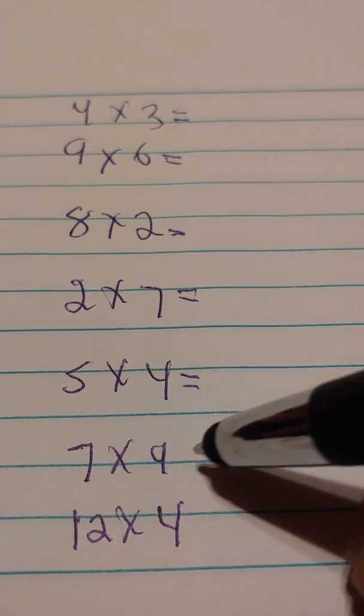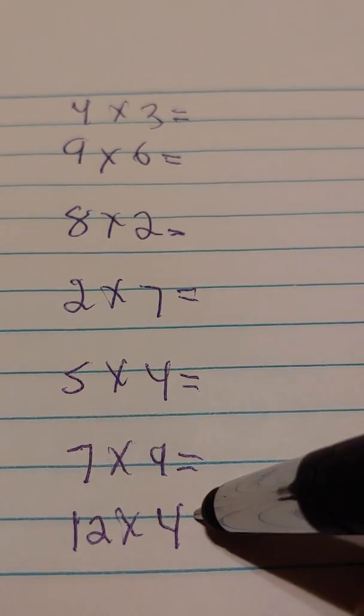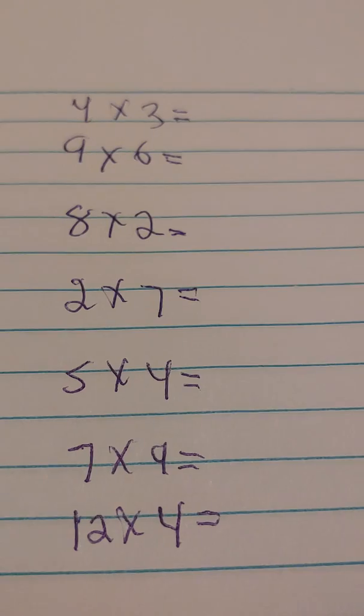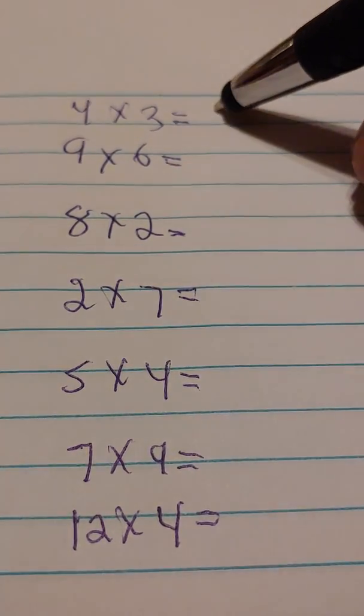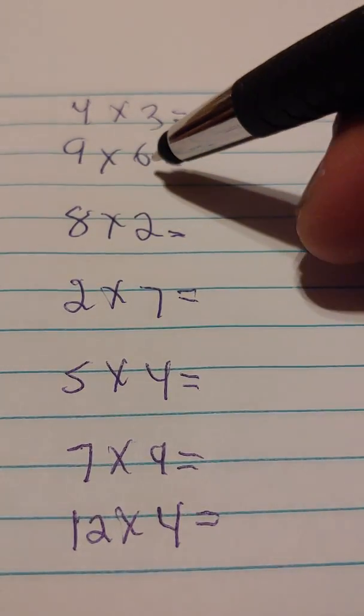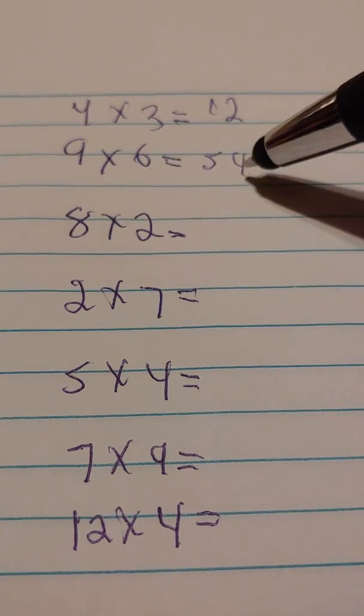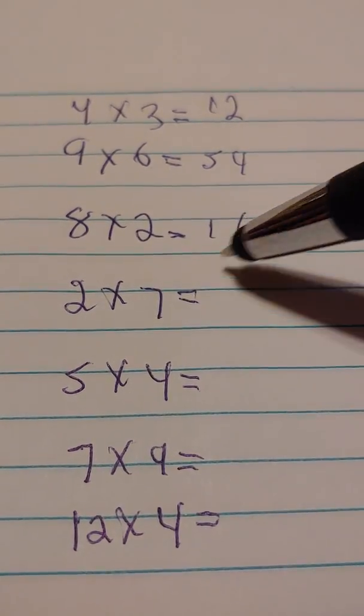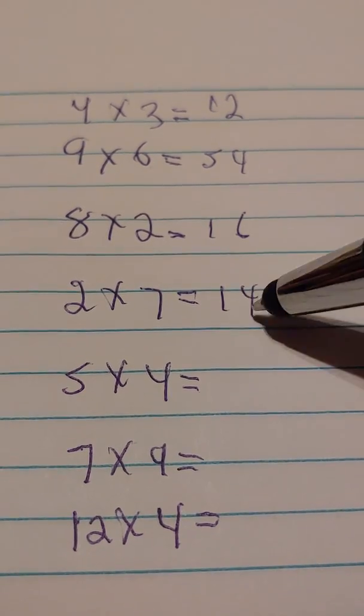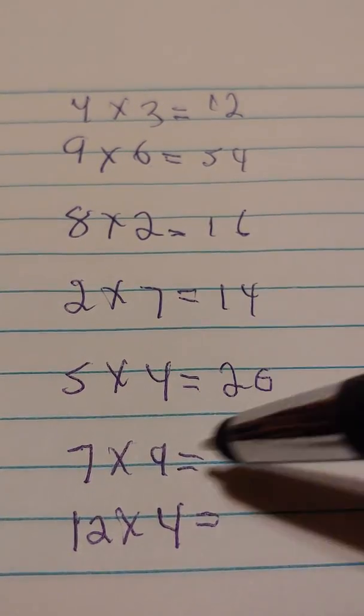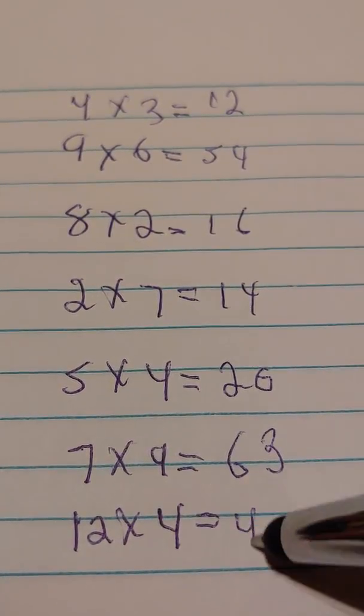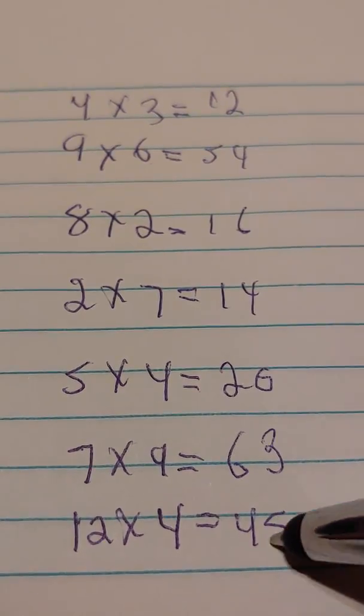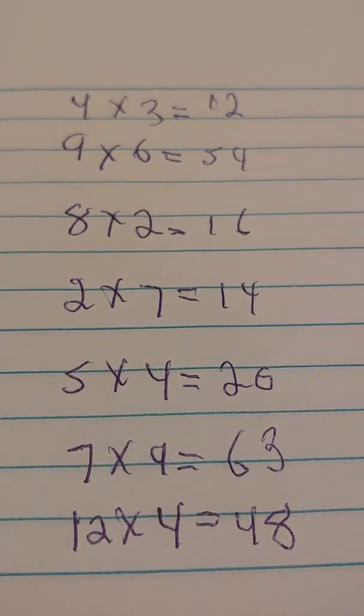A lot of times people say things were much easier, and then they got harder. We'll see about that. We know that 4 times 3 is 12, it's easy. We know that 9 times 6 is 54, this is 16, this is 14, this is 20, this was 63, and this was 48. We kind of learned that.